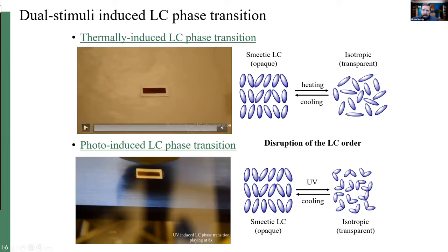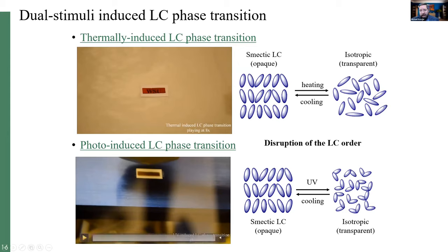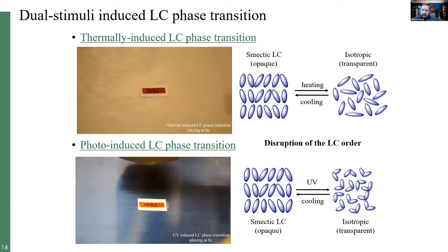We can also use light to induce the liquid crystalline phase transition. Thermally, heating the material above the liquid crystal phase transition causes the initially opaque material to become transparent, revealing letters underneath. We can also use UV light to do this: because of the cis-trans isomer change in azobenzene, applying UV light to the initially opaque sample disrupts the liquid crystalline phase, causing it to become transparent as the liquid crystalline phase breaks up.